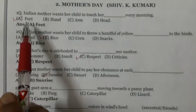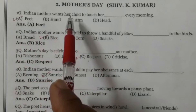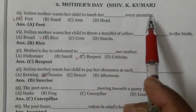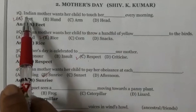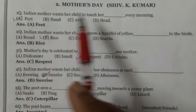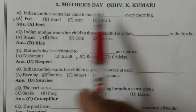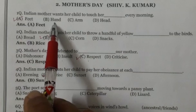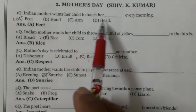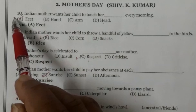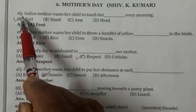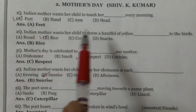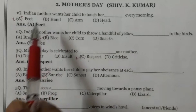Question number 1: Indian mother wants her child to touch her dash every morning. Indian mother chahti hai ke uska bachcha har savere uske pairan chue. Four options: feet, hand, arm, head. The right option is feet — Indian mother chahti hai ke uska bachcha har savere uske pairon chue.